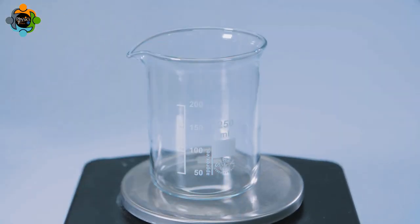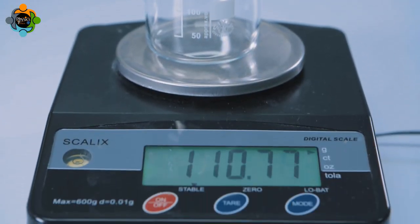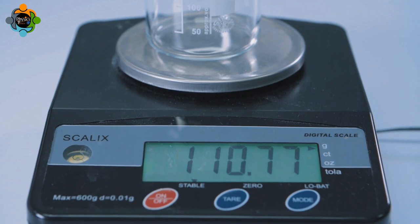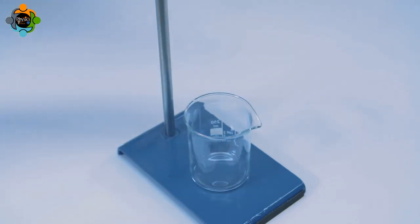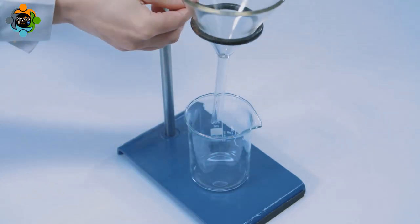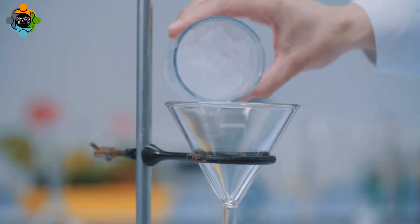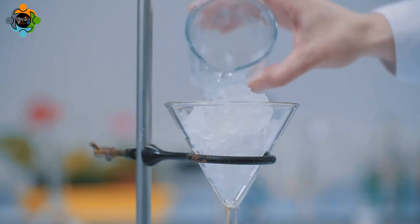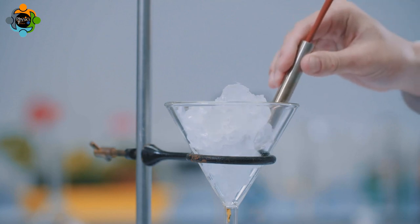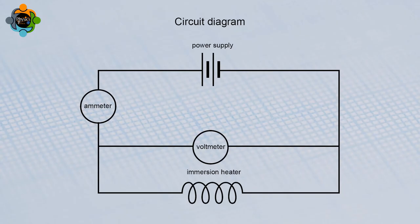First, the mass of the empty beaker must be measured. An immersion heater is fully covered in ice inside the funnel. This is placed over the beaker.